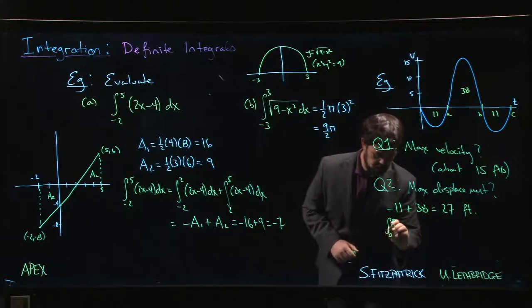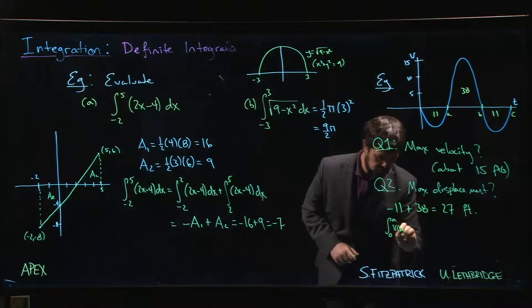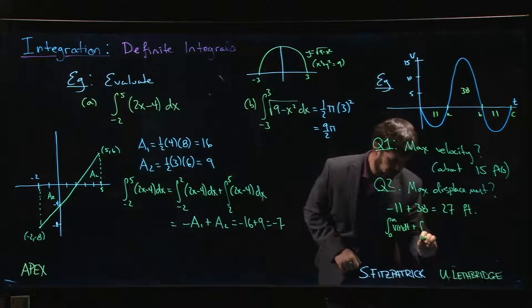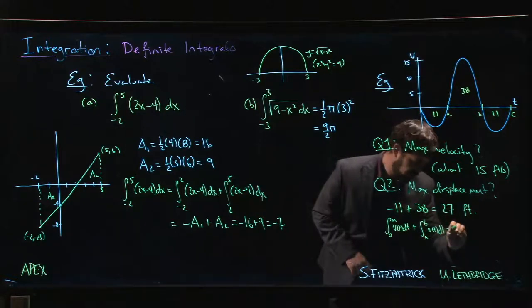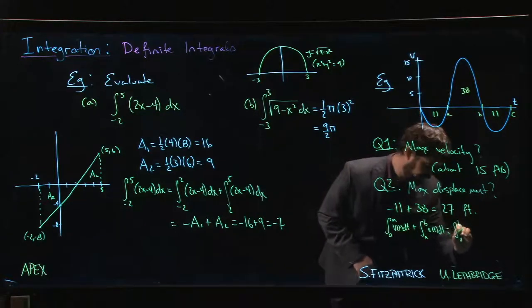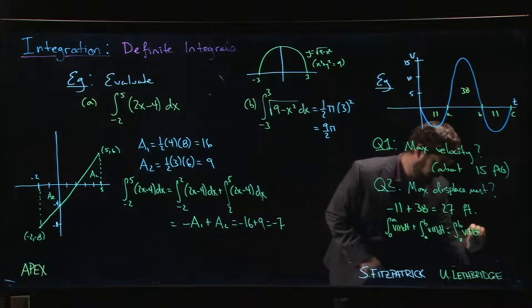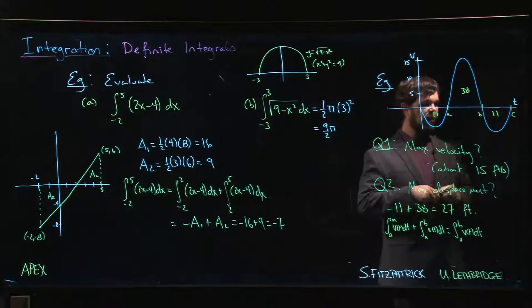That gives us the integral from 0 to b of v(t) dt. If we were to continue on and add the integral from b to c, well then we're moving backwards again.